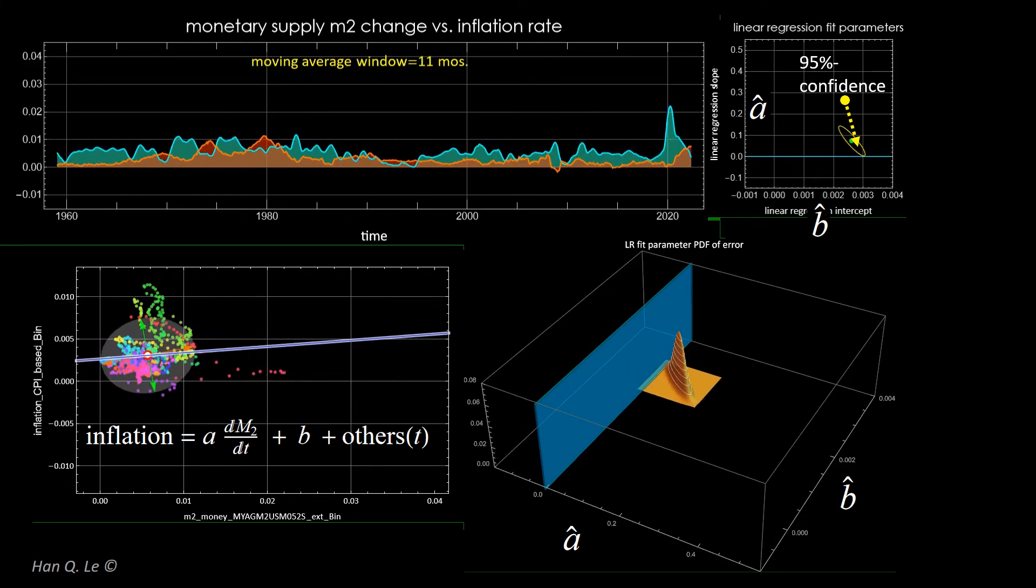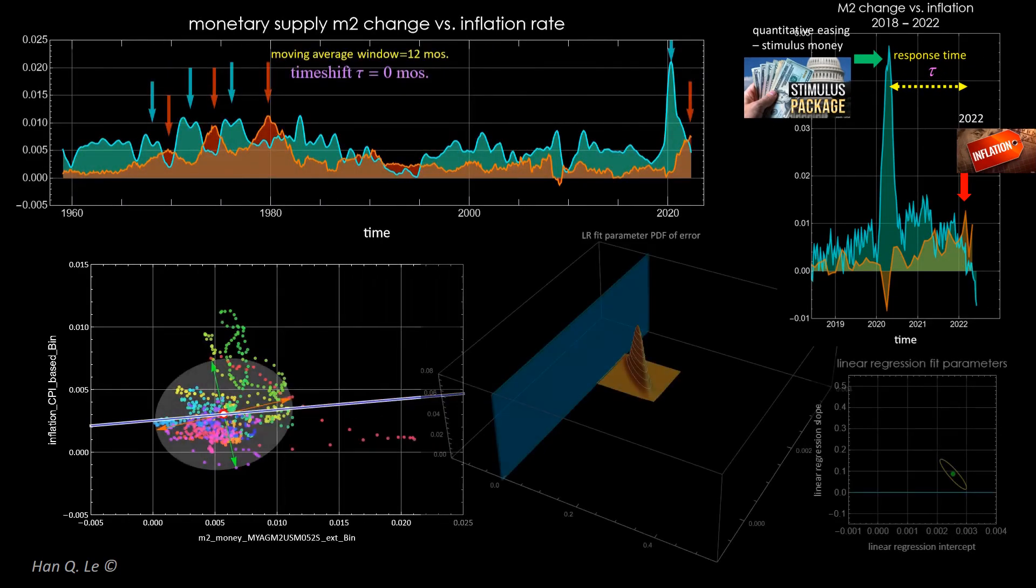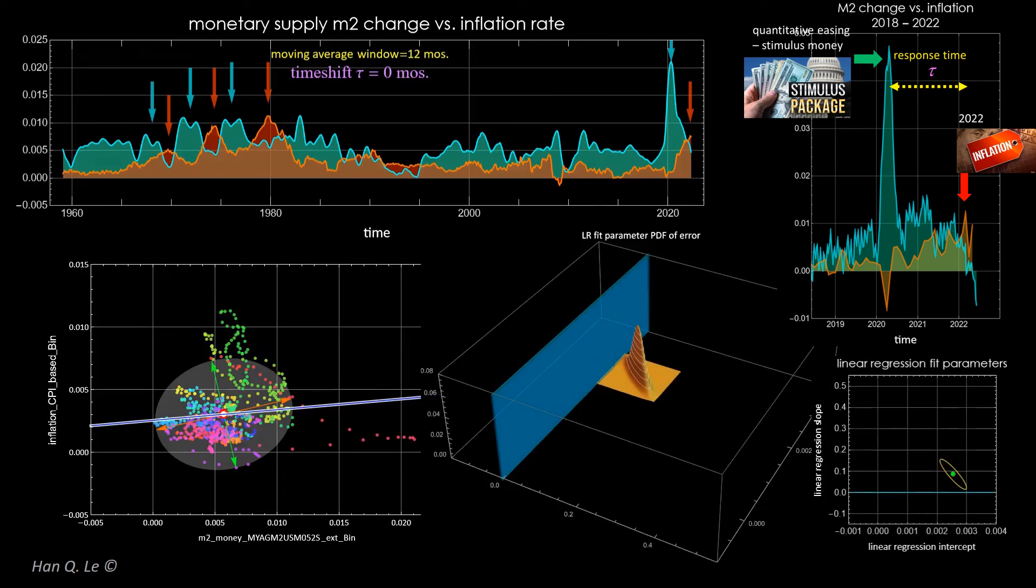As mentioned previously about the time response hypothesis, in the follow, the inflation data is time shifted backward, and its correlation with M2 change is studied as a function of the time shift parameter tau.